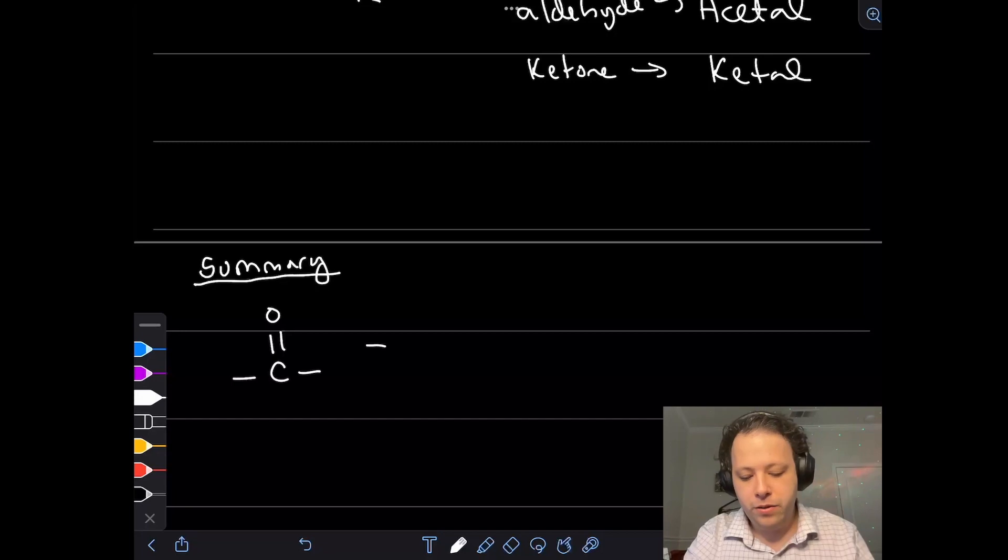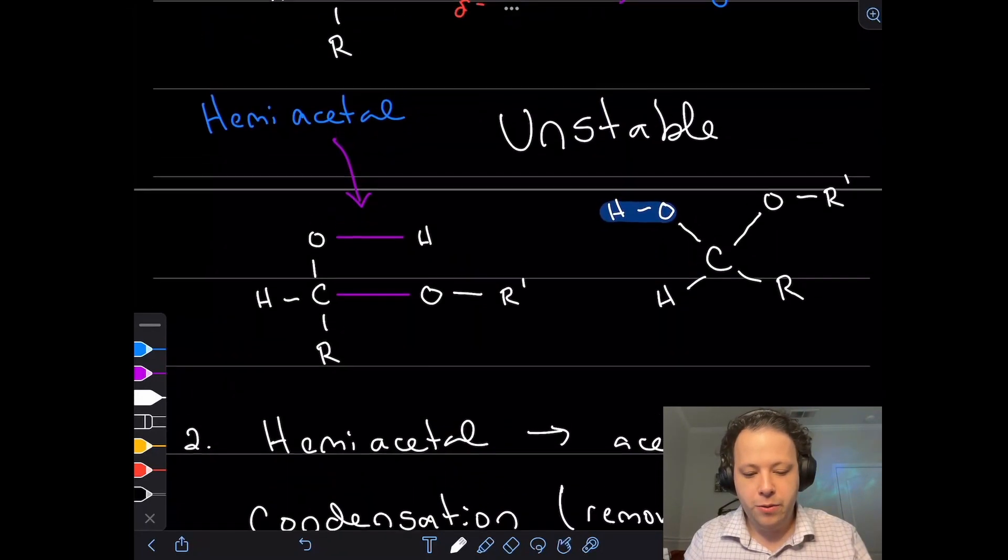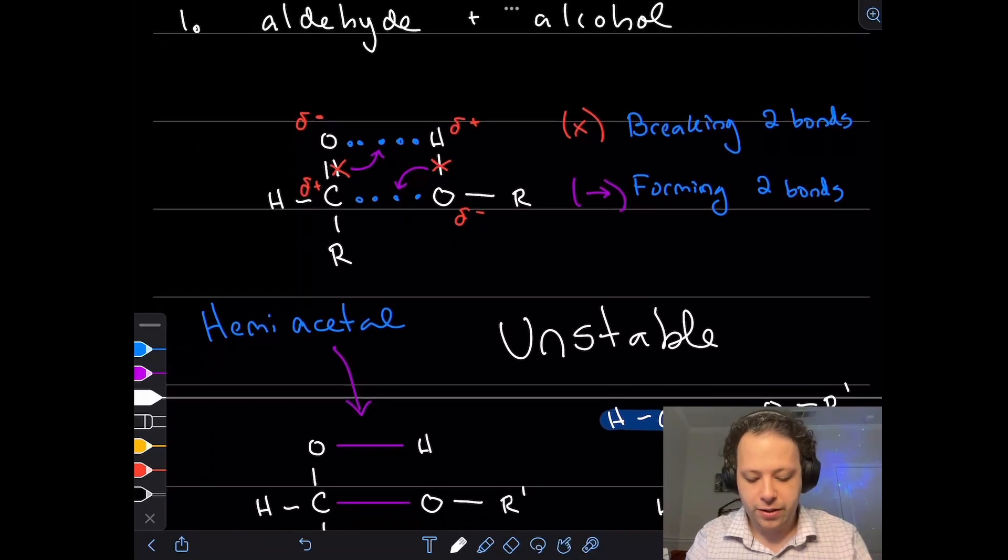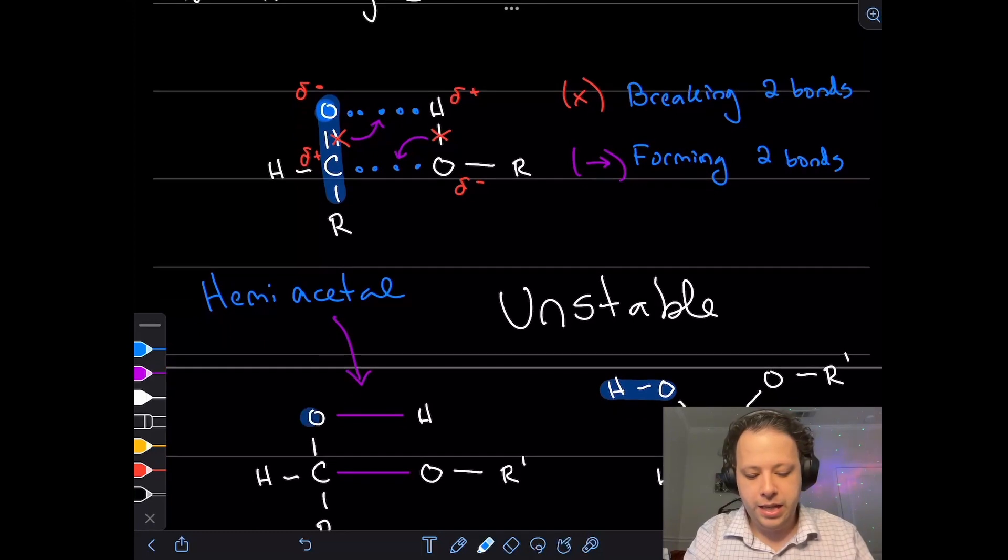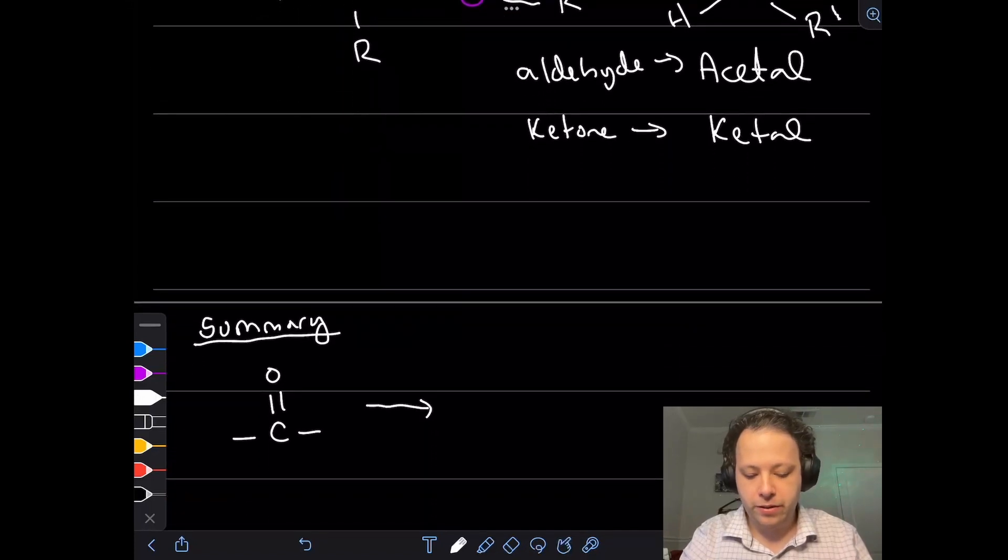If you remember in the beginning, we started with a carbonyl. That carbonyl, what exactly did it turn into? If we go back up, we can see that we had our carbonyl here that I'm highlighting in blue, and we can see that it turned into an alcohol. So that was step one, the carbonyl turned into an alcohol. So let's draw that for ourselves.